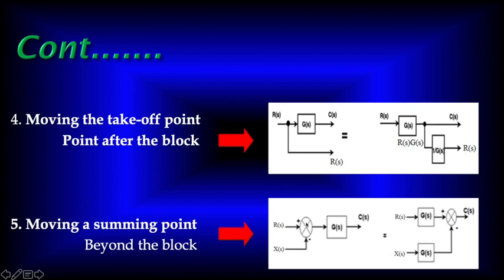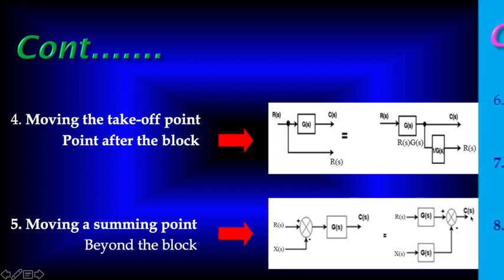Moving a summing point beyond the block: The signal is R(s) minus X(s), and multiplying by G(s) gives C(s). In the rearranged form, C(s) equals R(s) into G(s), and X(s) multiplied by G(s) gives the same signal. So we get the same result.